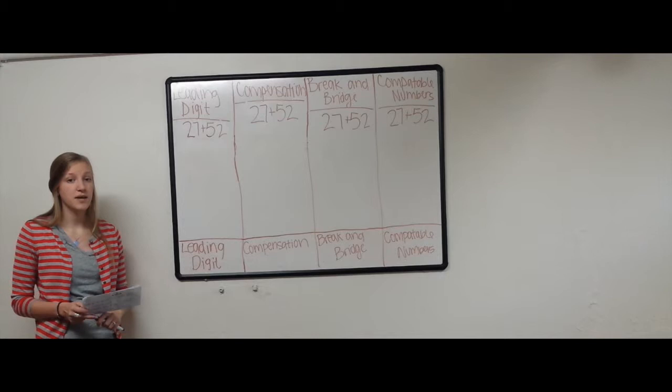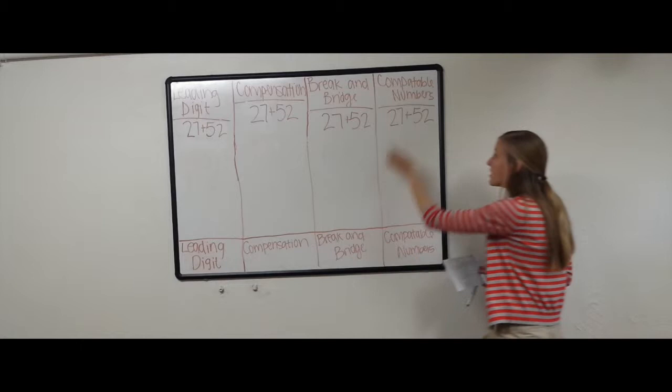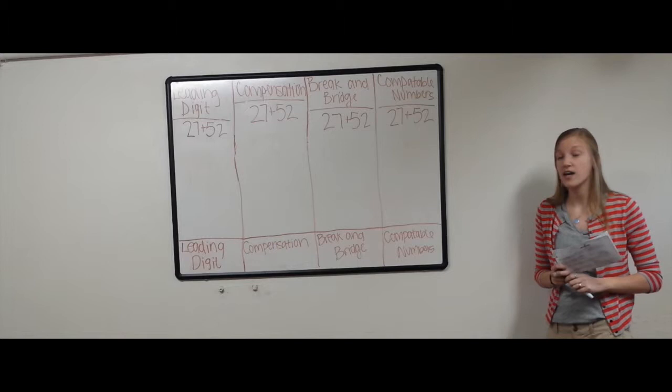So today I'm going to teach you four different ways of adding to make it a little bit easier. Our four different ways is leading digit, compensation, break and bridge, and compatible numbers.